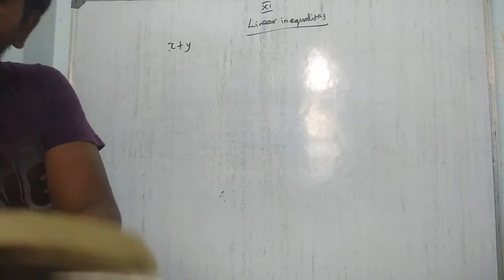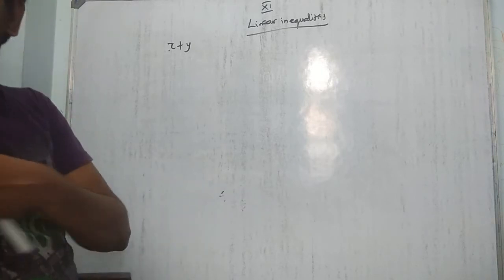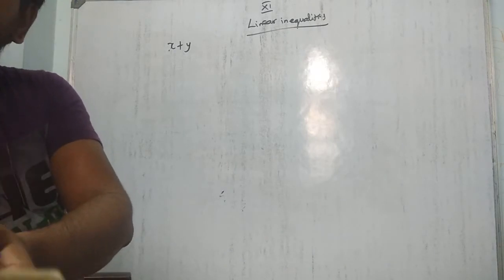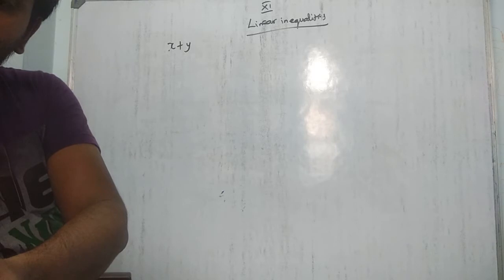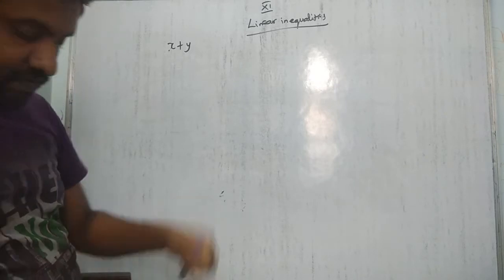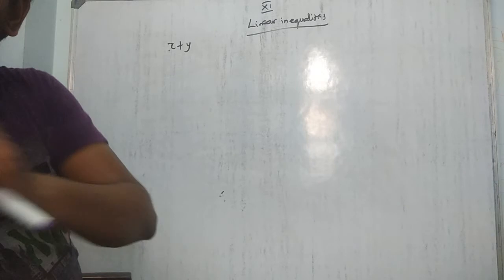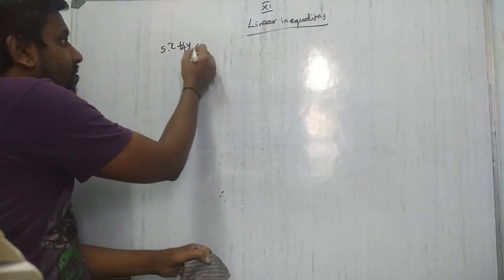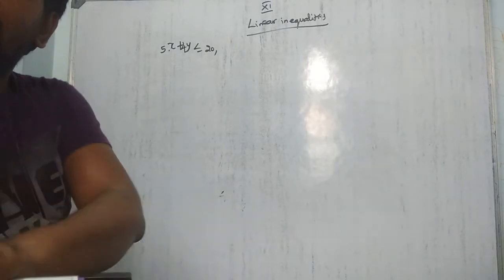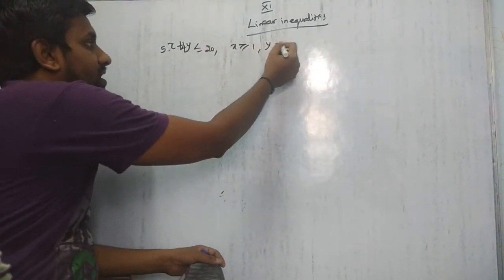Now let's take a textbook sum with two-variable inequalities. The system is: 5x + 4y ≤ 20, x ≥ 1, and y ≥ 2. We need to draw the graph and find the feasible bounded closed region.